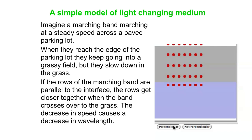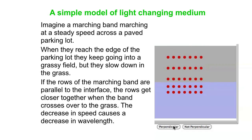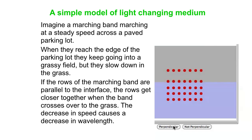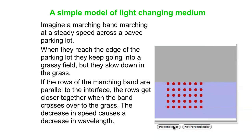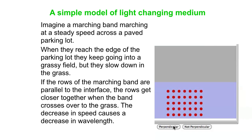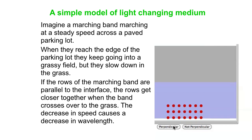Here's our marching band going across the parking lot at a particular speed. When the rows of marchers hit the slow medium, they slowed down, and that pulls the marchers closer together, because of the decrease in speed in the second medium. There is no change in direction there at all. That's a special case where you don't get a change in direction when you're coming in perpendicular to the interface, and that happens for light as well.